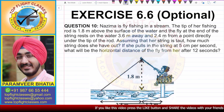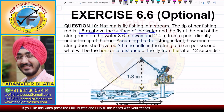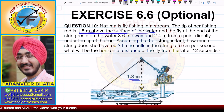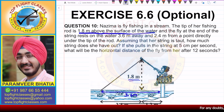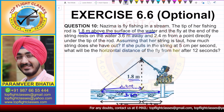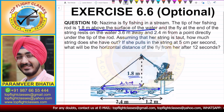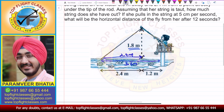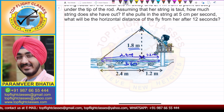Nazima is fly fishing. The tip of her rod is 1.8 meters above the surface of the water — that distance is 1.8 meters. The string rests 3.6 meters away, meaning that distance is 3.6 meters. And it is 2.4 meters from a point directly under the tip of the rod, meaning that distance is 2.4 meters. We want to find how much string she has out — that is, we want to find this length.